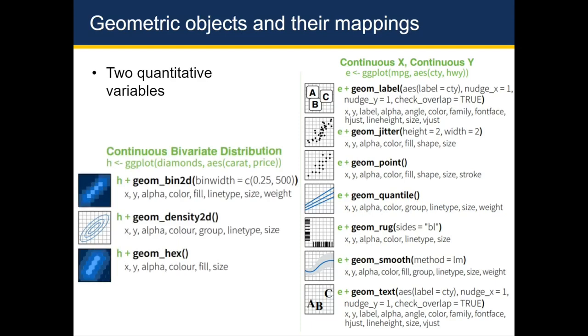You also have other options that you can use. geom_bin2d will give you a heat map where the bright points indicate where more of the points are located. And then geom_density2d and geom_hex are two other options that you can use to illustrate the relationship between two quantitative variables.